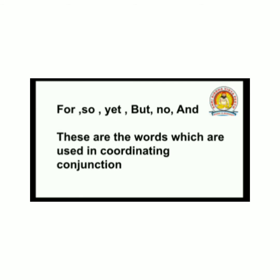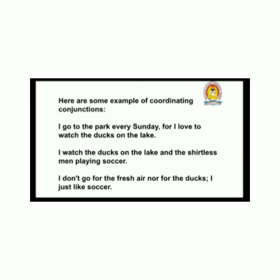The words used in Coordinating Conjunction are: for, so, yet, but, nor, and. Here is an example — 'I go to the park every Sunday, for I love to watch the ducks on the lake.' Here, he is saying that he watches the ducks every Sunday on the lake.